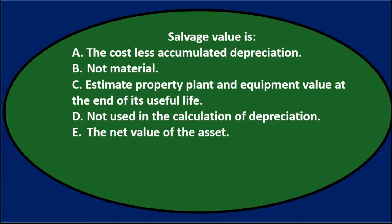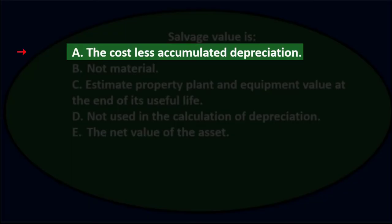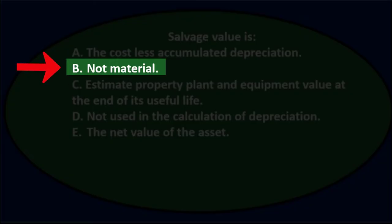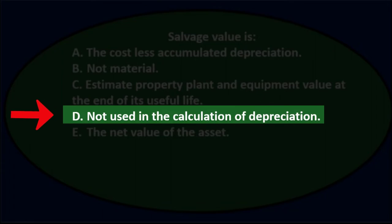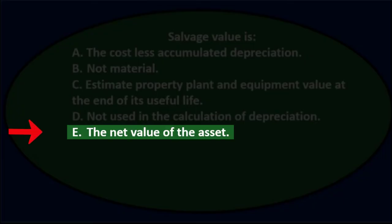Next question. Salvage value is: A. The cost less accumulated depreciation. B. Not material. C. Estimated property, plant, and equipment value at the end of useful life. D. Not used in the calculation of depreciation. Or E. The net value of the asset.